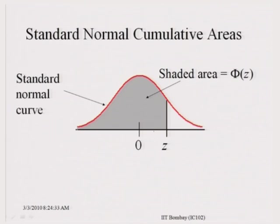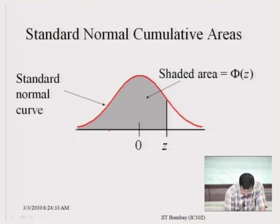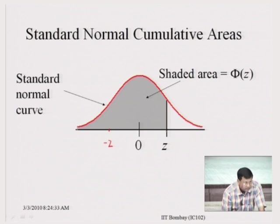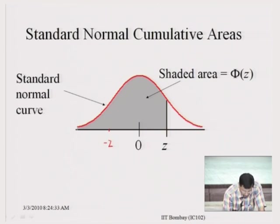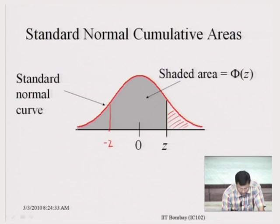This curve is symmetric about 0. So the area on the left of Z can be used to find out the area on the left of minus Z. The table provides the area on the left of Z where Z is positive. However, the same table can be used to find the area on the left of minus Z. The area on the left of minus Z is the same as the area on the right of Z, and this equals 1 minus the value in the table, which is the area on the left of Z.